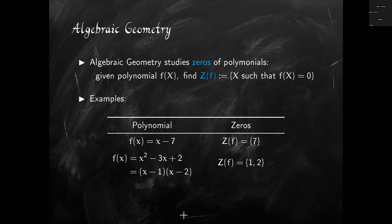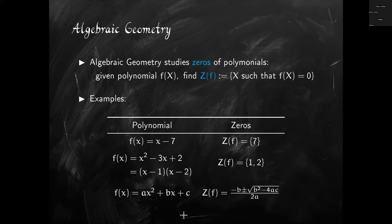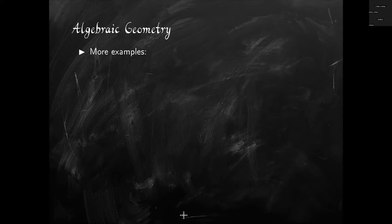Our next example looks more complicated, although it really isn't — it's a generic quadratic equation. We know the roots from high school: it's minus b plus or minus the square root of b squared minus 4ac, divided by 2a. Those roots are the points at which the polynomial evaluates to zero. Now let's do more examples.